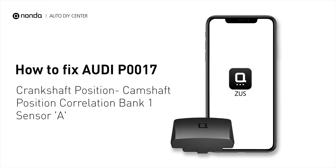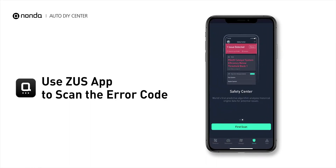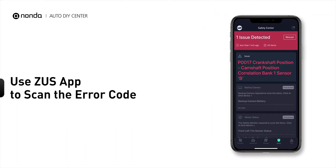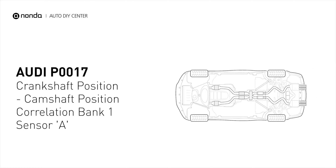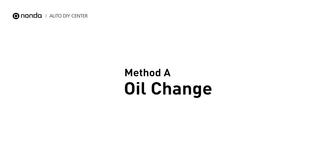This P0017 repair video is dedicated to Audi drivers. If your Audi is getting a P0017 error code, this video is going to show you four practical solutions to fix the error code at home. Use the Zeus app to scan your vehicle and see the error code P0017 — it indicates that the camshaft position sensor A for bank one does not correlate to the signal from the crankshaft position sensor. Here are four of the most practical solutions to fix Audi's P0017 error code. Method A: oil change.